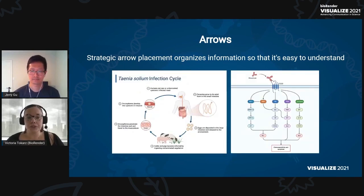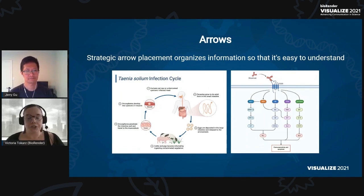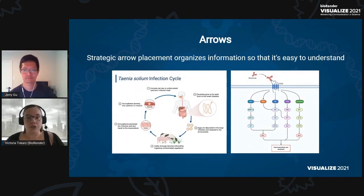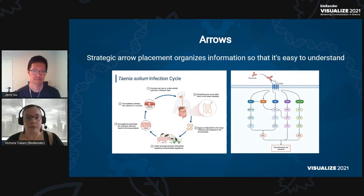This is what strategic arrow use looks like in a figure. Strategic arrow use can also really help you out with tip number one, which was layout, because it'll show your viewer exactly where to look. In both of these images, just following the arrows tells the complete story of the figure, and it makes it so easy to understand.